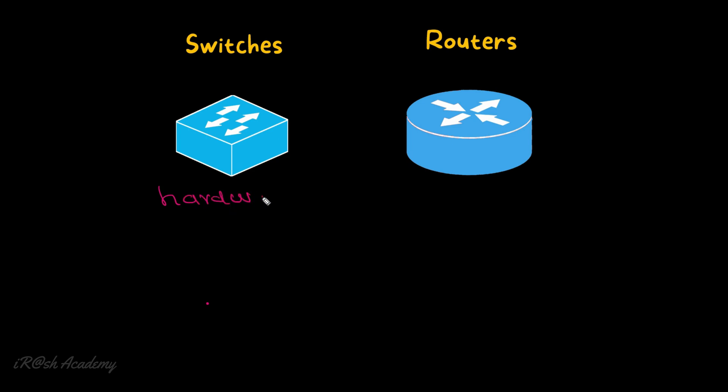Routers are software-based devices. Unlike network switches, which are hardware-based devices using ASIC chips and are therefore very fast, routers are not as fast as network switches and do not use hardware-based performance. Cisco developed an operating system for routers called IOS — Internetwork Operating System. All Cisco devices use IOS, and because of its rich software features, routers can do much more than hardware-based network switches.